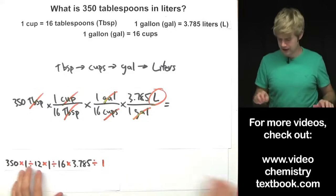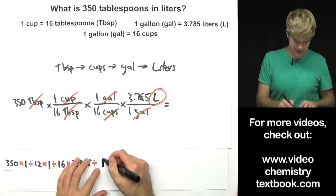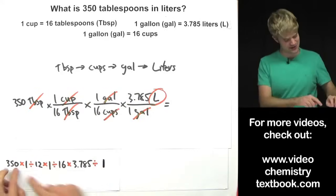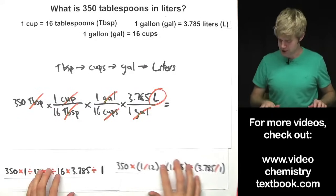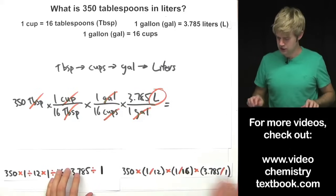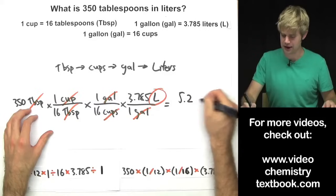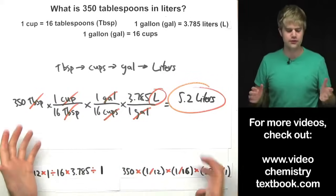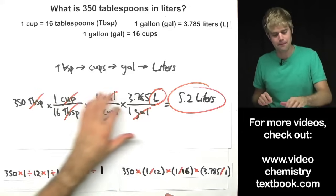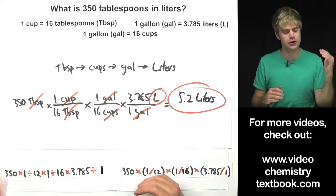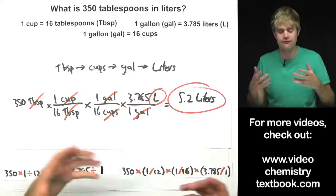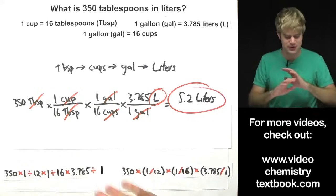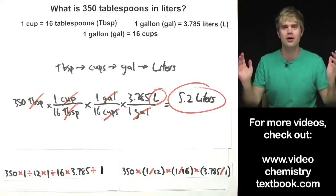Now for the math: I do 350 times 1 divided by 16, times 1 divided by 16, times 3.785 divided by 1. However you punch it in — chained out or using parentheses on a scientific calculator — the answer you'll get is 5.2 liters. That's how to solve conversion factor problems where you need to string together multiple factors. Just set it up so your units cancel and you're left with the final unit you want, and you'll know you've done it correctly — no matter how many conversion factors you need.